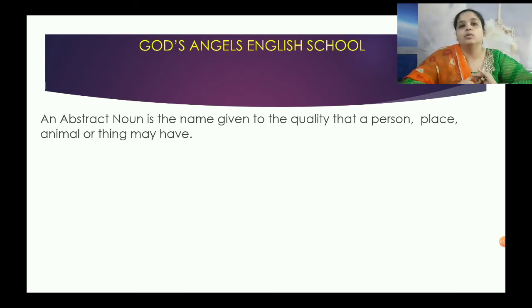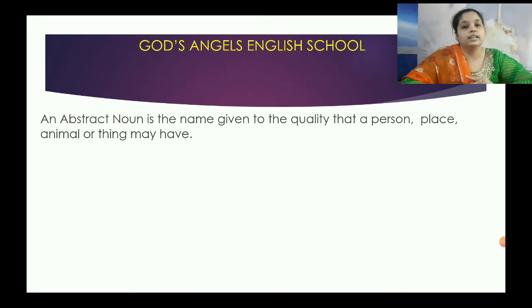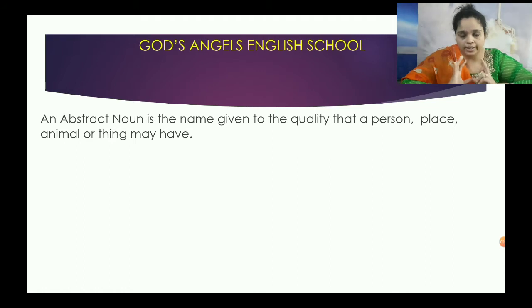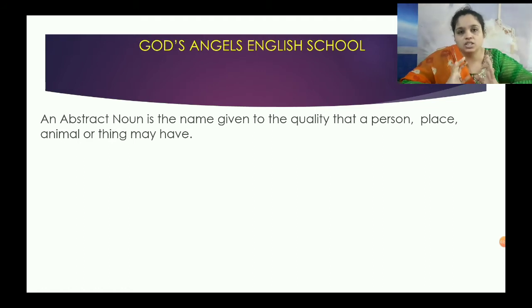Proper noun is the proper name of the person, place, and thing. Collective noun is the name of the group of things — koi bhi chiz ke group ka naam hota hai. Collective noun.